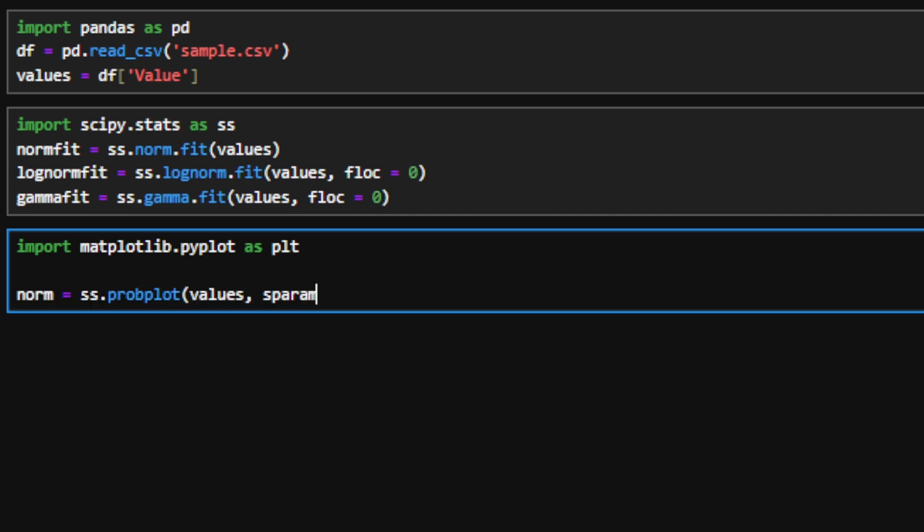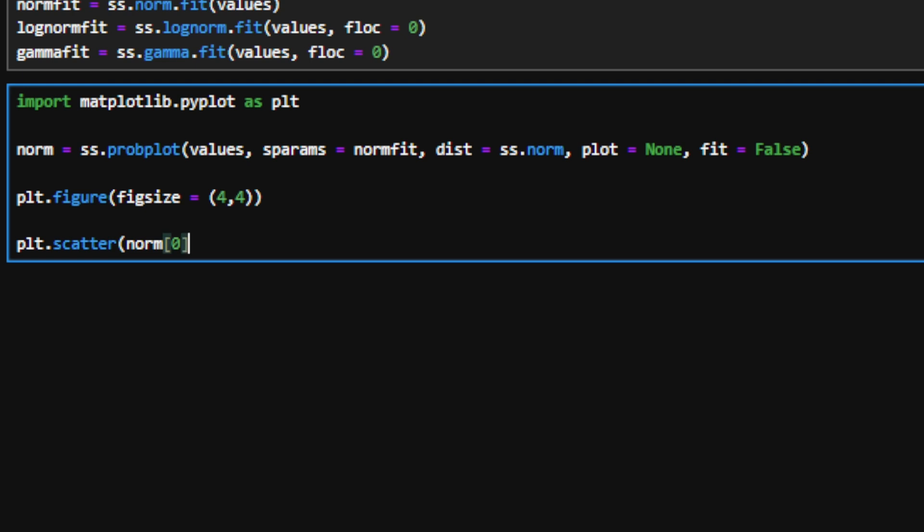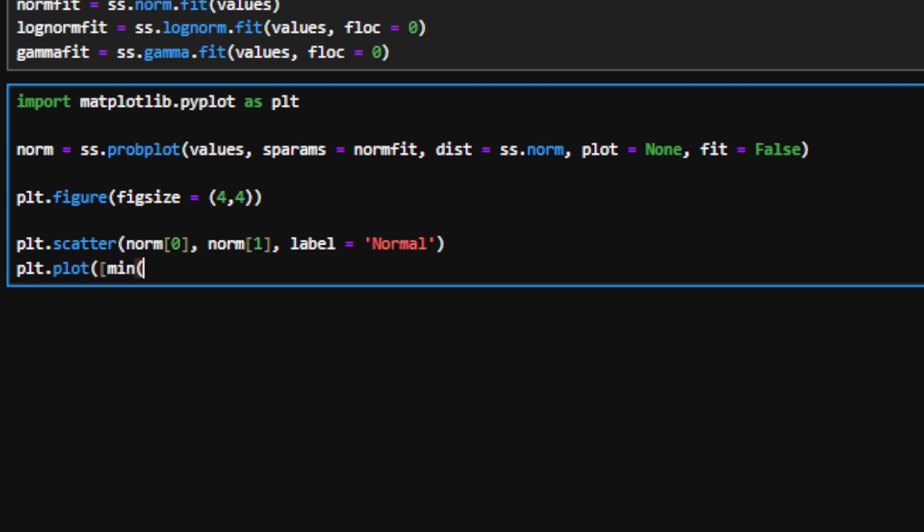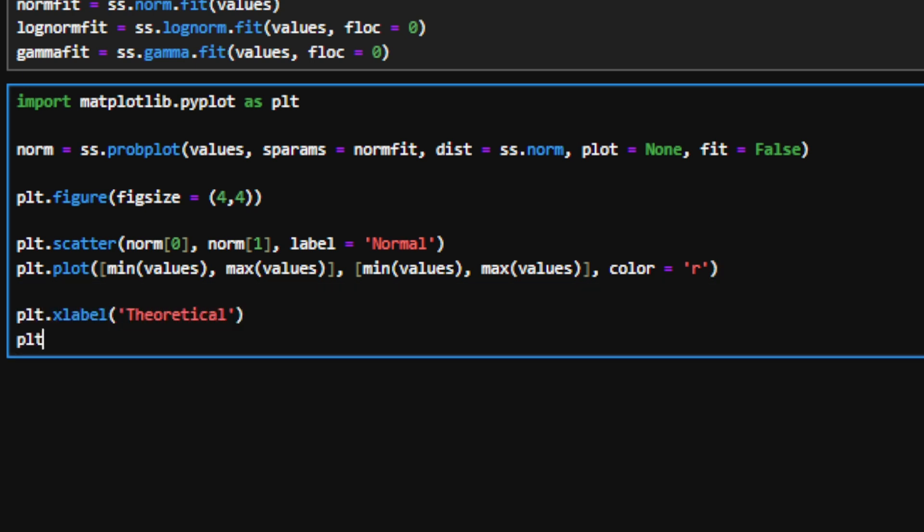First, I will use the available function probplot in SciPy to generate my empirical and theoretical quantiles. I'll have to specify the empirical data being analyzed, the fitted distribution parameters, and the distribution type. I personally prefer to not use the automatically generated plots, so I have more control over my graphs. So I'll set that argument to none. Let's now initialize a plot. We'll create a scatter plot where the theoretical quantile values are sitting in the array index 0 and the empirical quantile values in the array index 1. I'll then layer on top of this plot a 45-degree line where the min and max for the values define the range it is shown for.